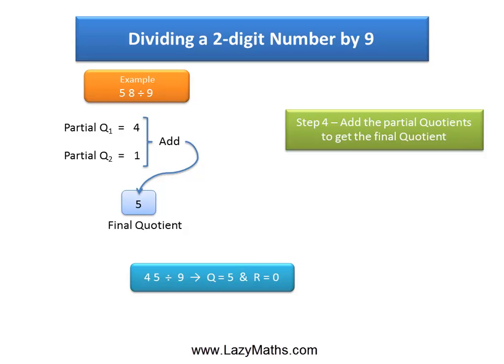So the final answer for 45 divided by 9 is quotient 5 remainder 0. Now we know that 45 divided by 9 is 5, but this is simply to prove that this shortcut really works for virtually any two-digit number.